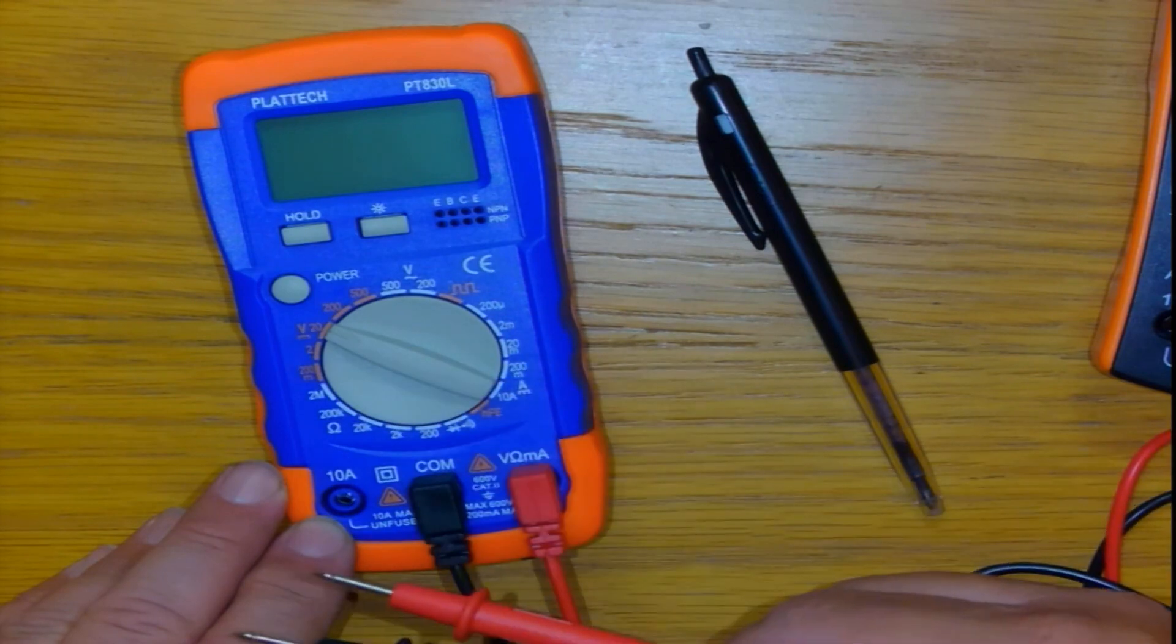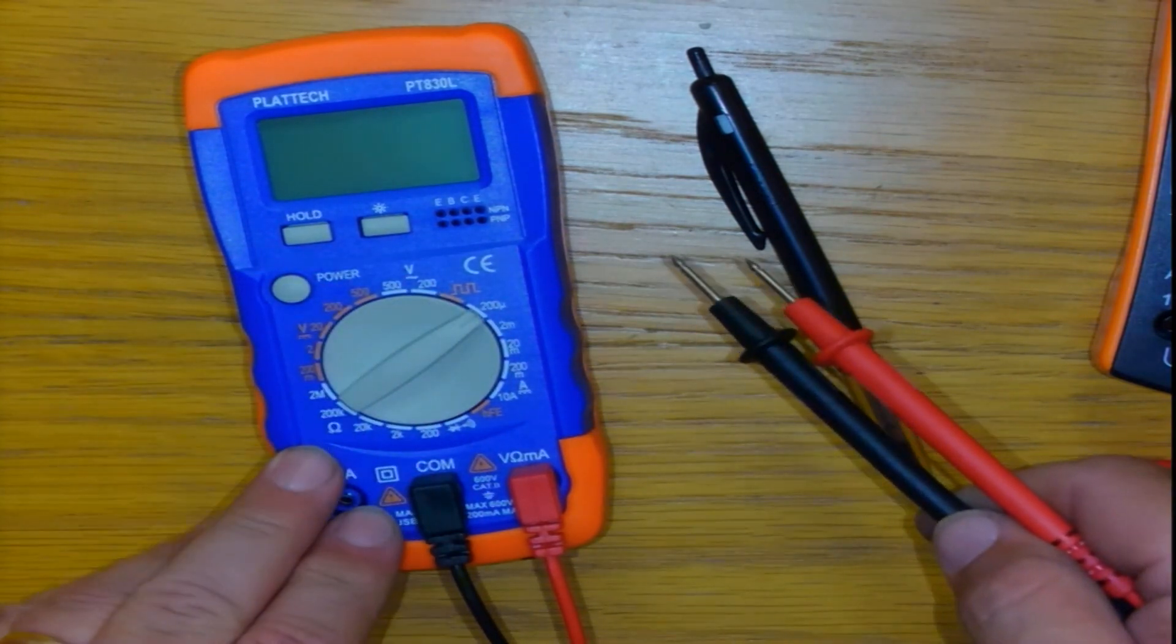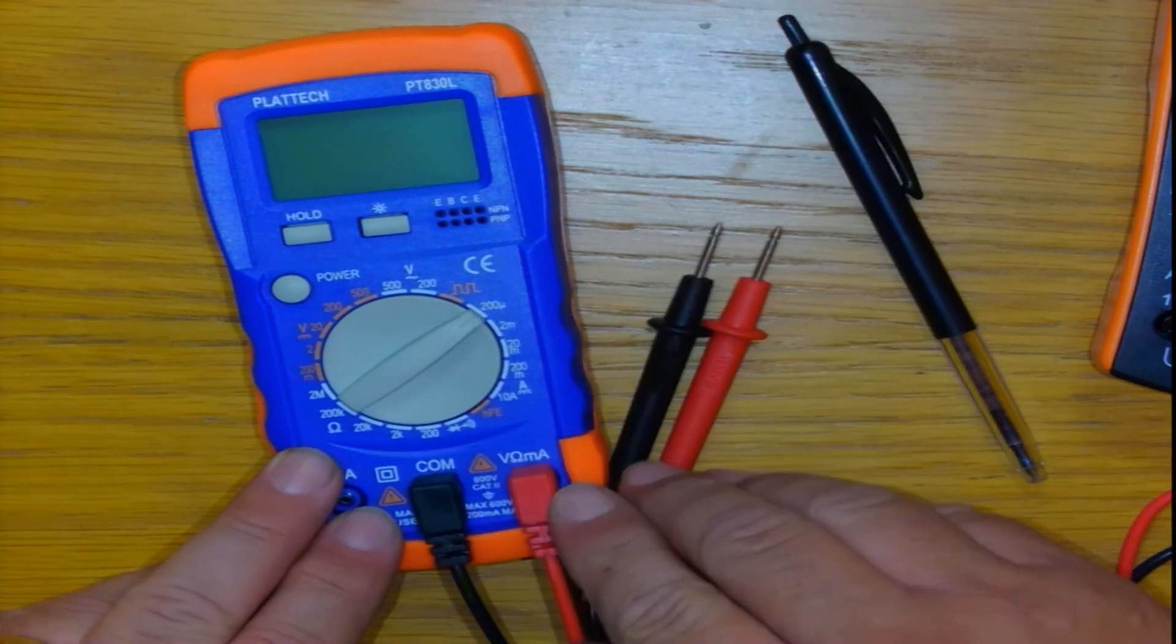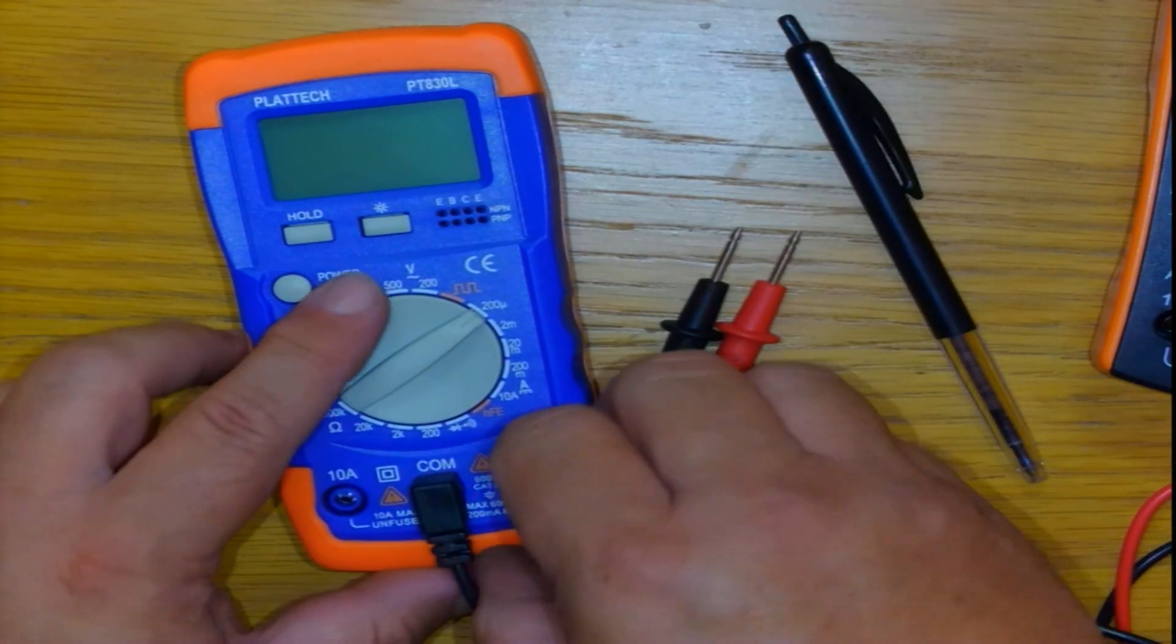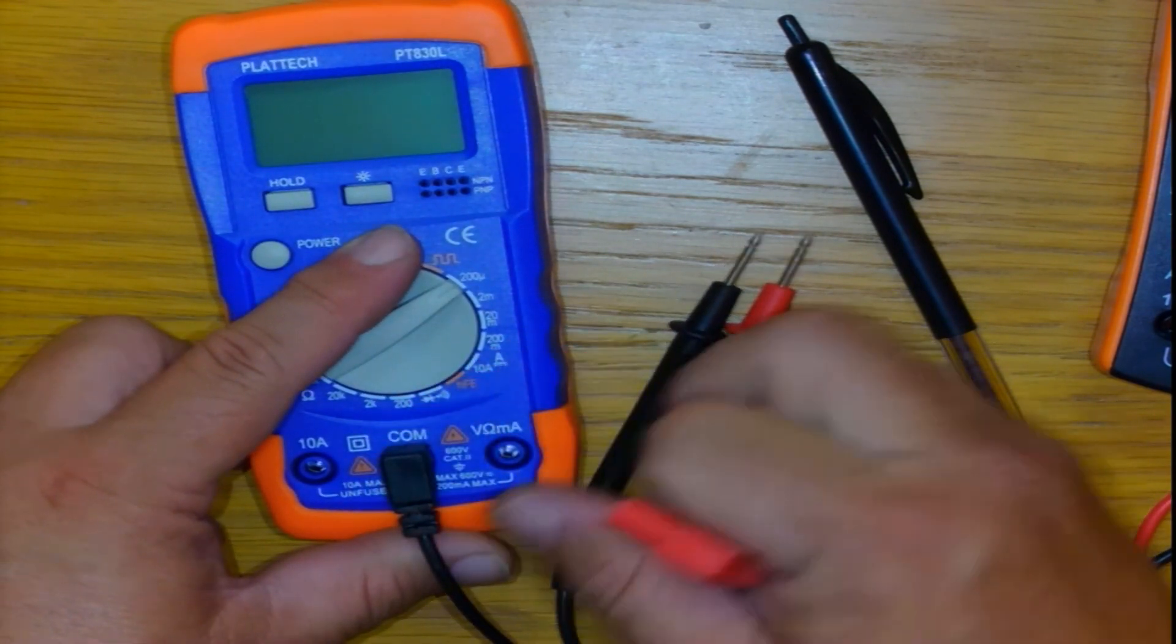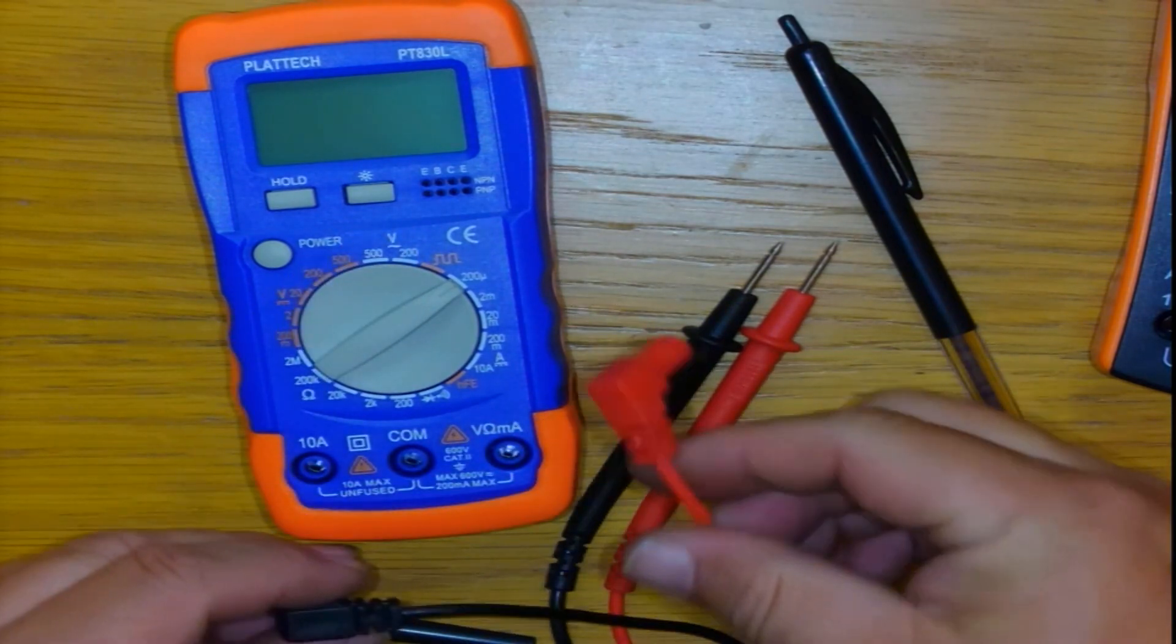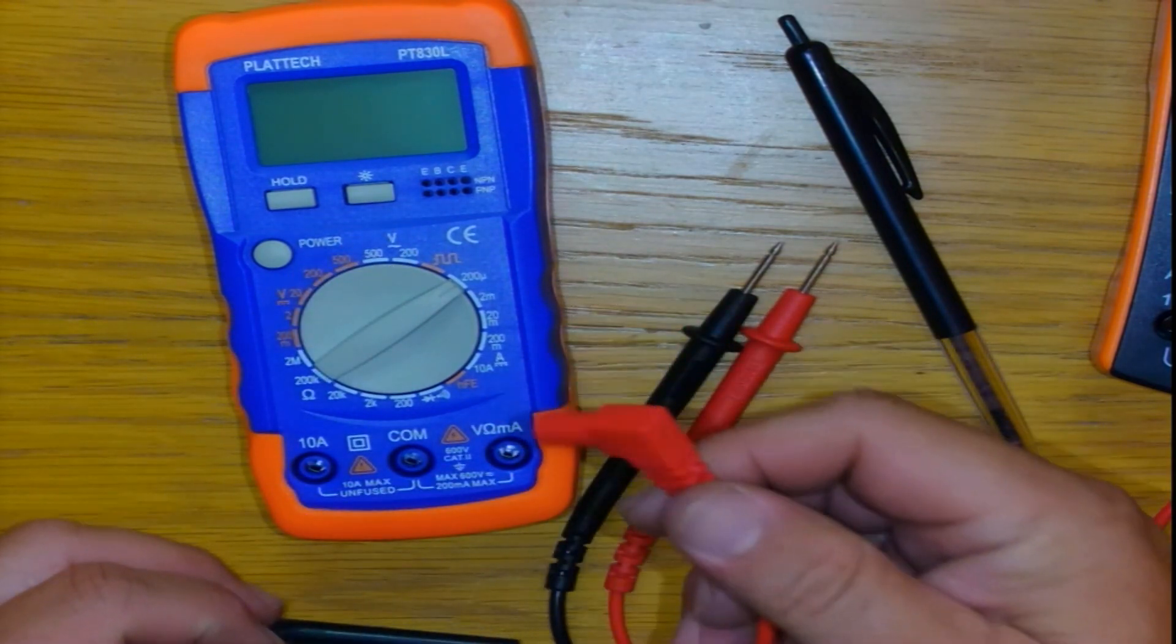If you can set it to the setting of measurement that you need to do, you should be able to be measuring. One last thing: be careful of the probes. You have red and you have black. Red is usually hot signal - that's where the energy is.